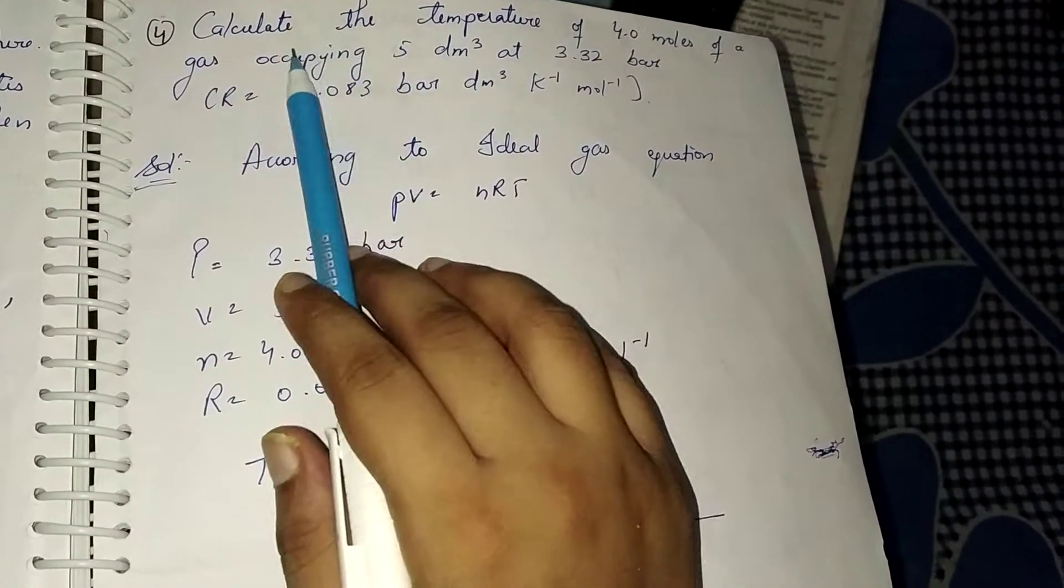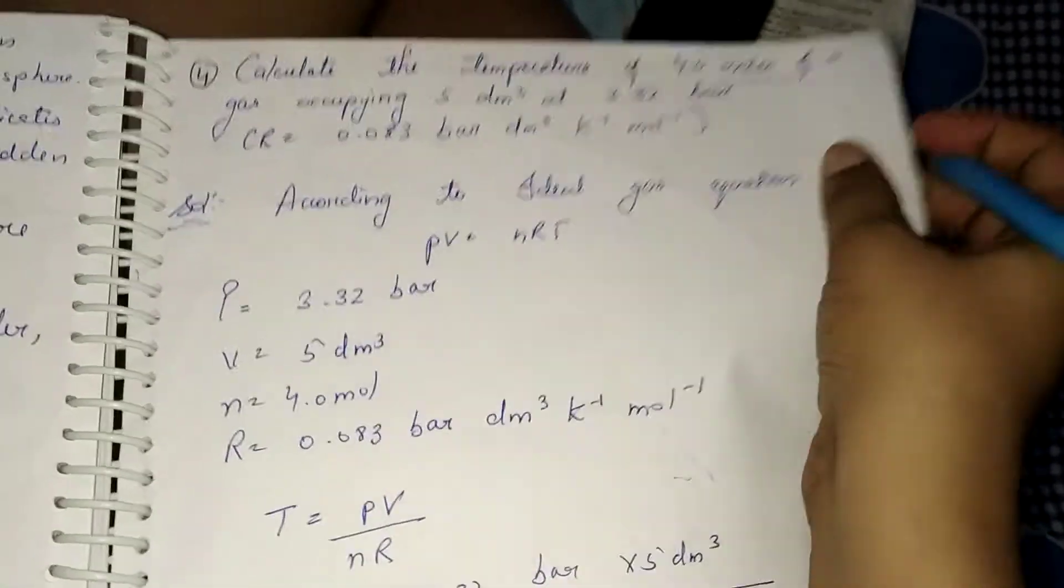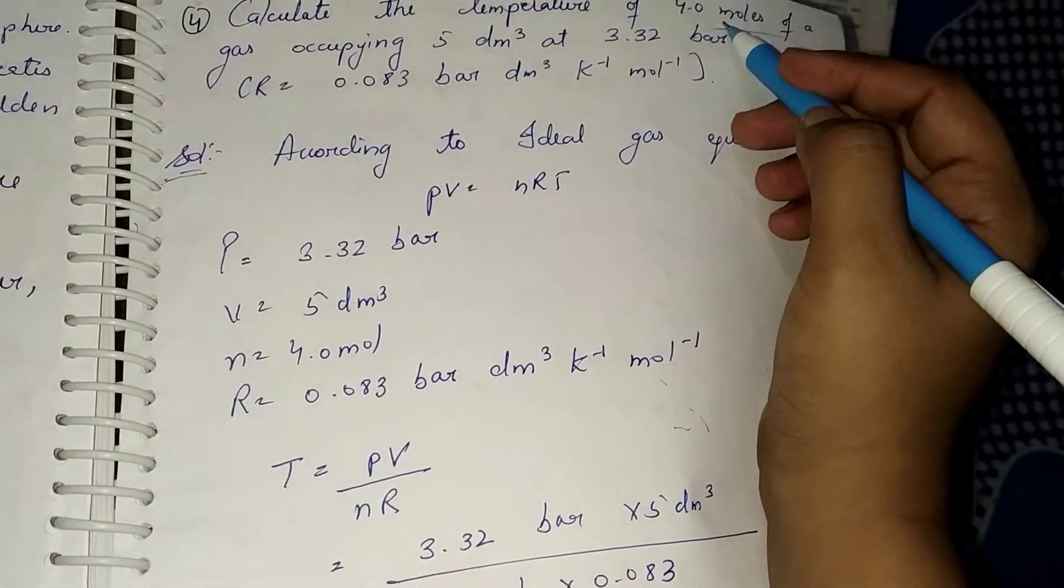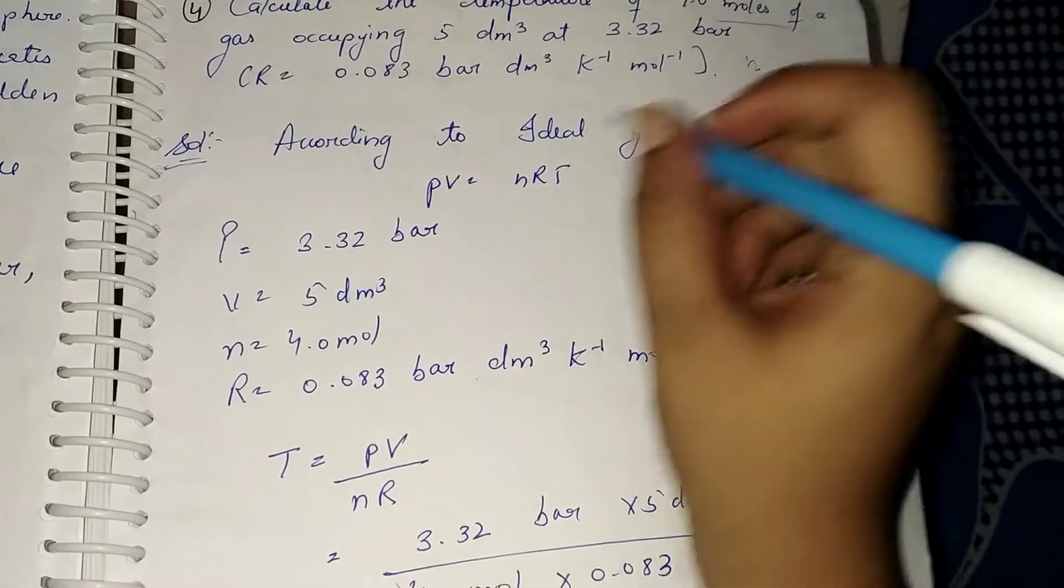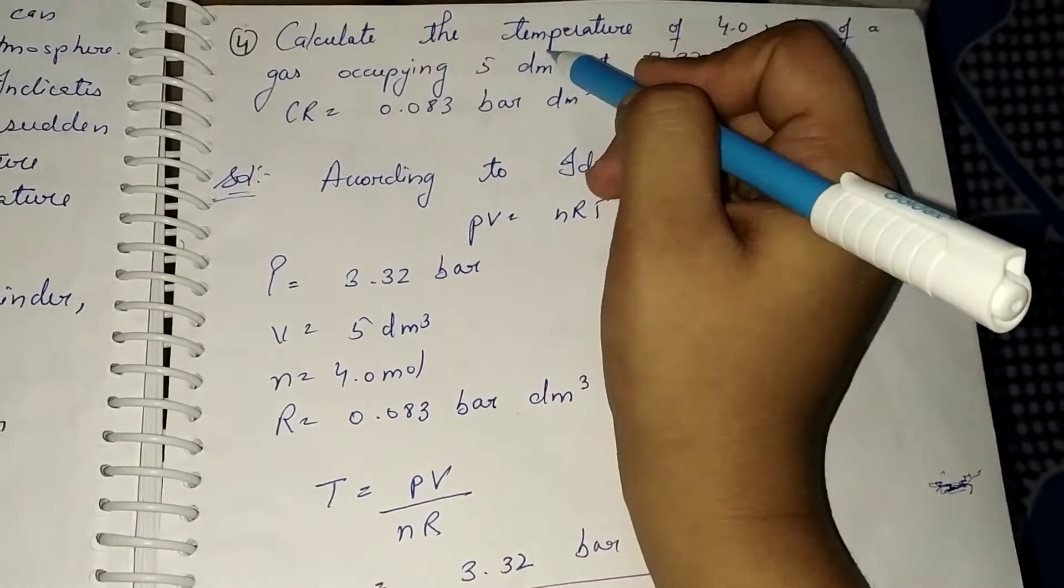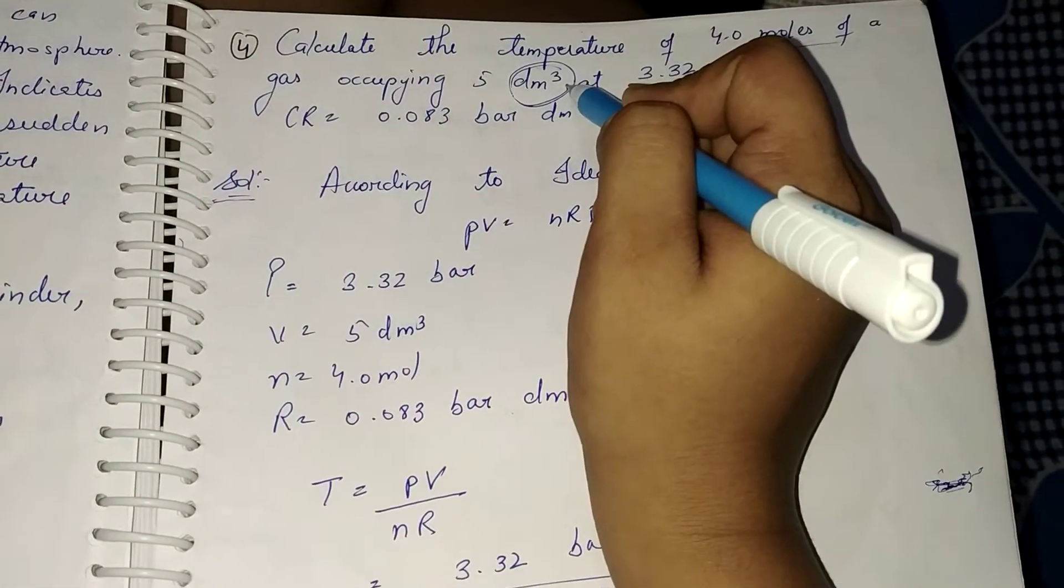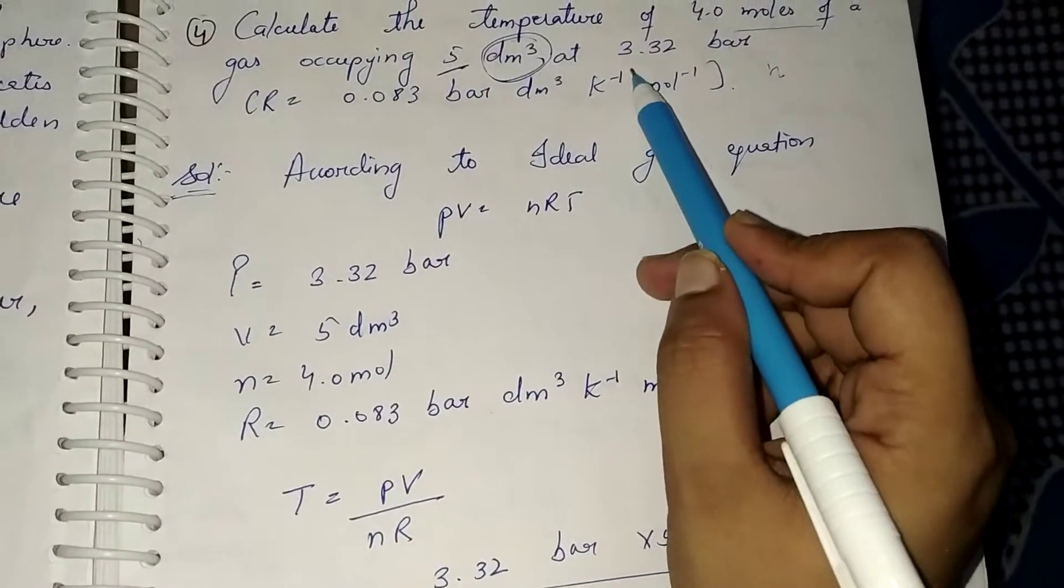So 4.0 moles is given, that is n. And the gas occupies 5 decimeter cube, which is the volume. So the volume V is 5 decimeter cube.